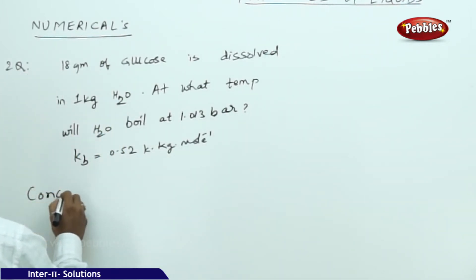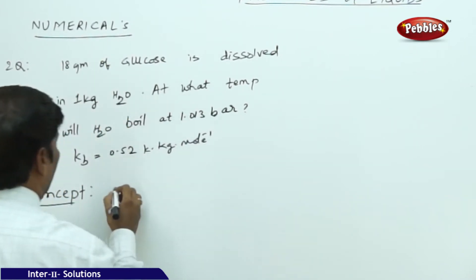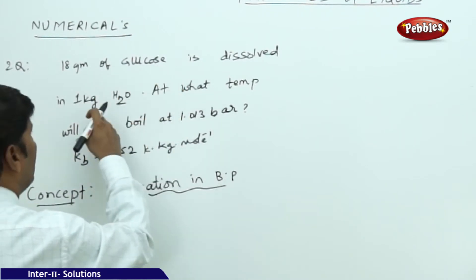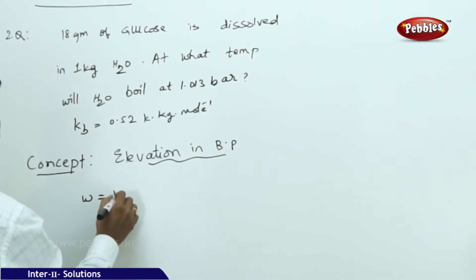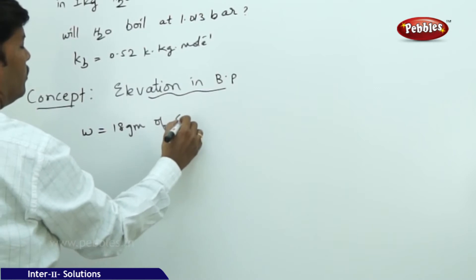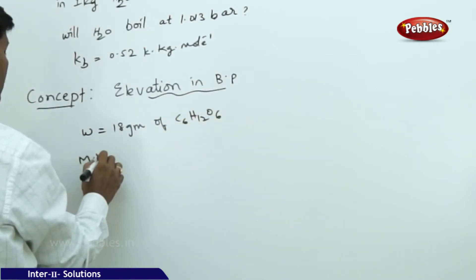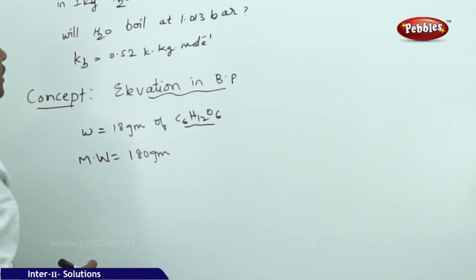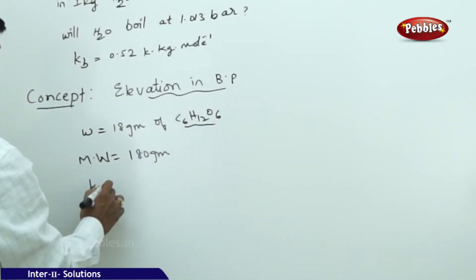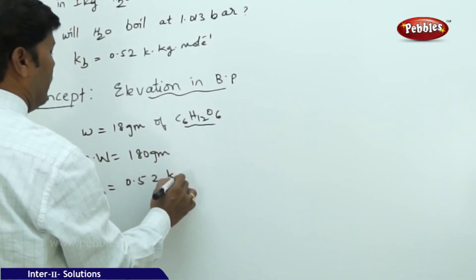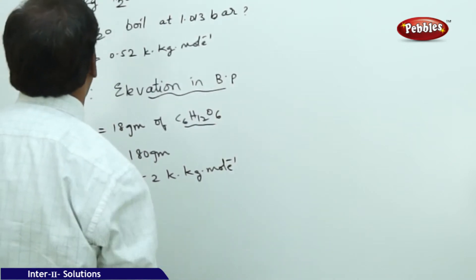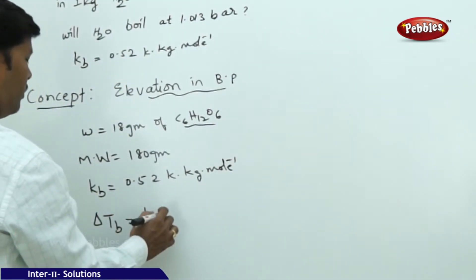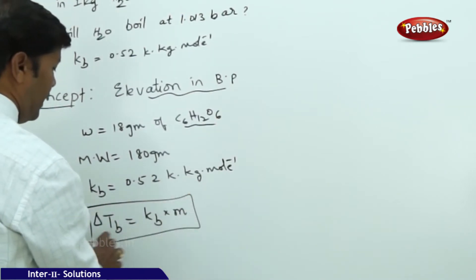This problem is based on the colligative property of elevation in boiling point. Here w = 18 grams of glucose (C₆H₁₂O₆), molecular weight = 180 grams. The formula to use is ΔTb = Kb × molality, where ΔTb = Ts − T₀, and in elevation of boiling point, the temperature of solution is always greater than the temperature of the pure solvent.